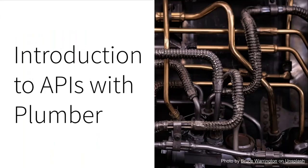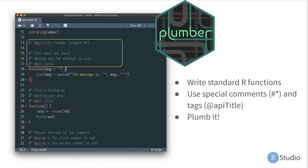Let's talk briefly about how Plumber works and how it creates this bridge between users, developers, and other tools and technologies. Here's an example of a Plumber API. If you just take a step back and ignore the comments, it should look pretty straightforward — if you've written R code before, we've got a couple of functions defined and we load the Plumber package at the top. Looking at the first function, it takes a single parameter 'message' and returns a list that echoes back that message.